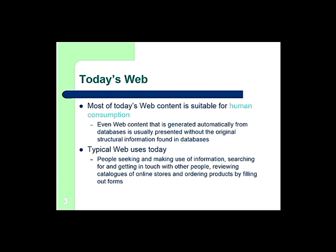If we talk about the current conventional or existing web of today, most of the web is for human consumption. We can visit several websites, read the content, understand it, get information, and do several tasks, but mainly it is for human consumption. Although there are many systems springing up that do things for us automatically, the web of today is for humans and the web of tomorrow — the Semantic Web — is for machines and humans.